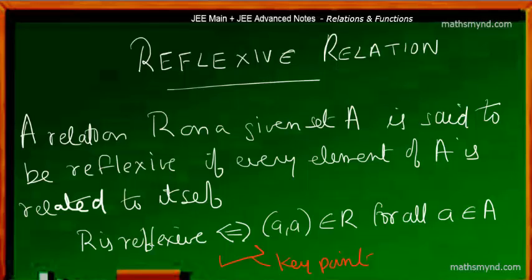For a particular given set A, a relation is said to be reflexive if every element of that set is related to itself. That is, the relation R is reflexive if and only if the ordered pair (a, a) is an element of R for all elements a in set A. The key point is that a relation is reflexive only if all ordered pairs of each element pairing with itself are present.